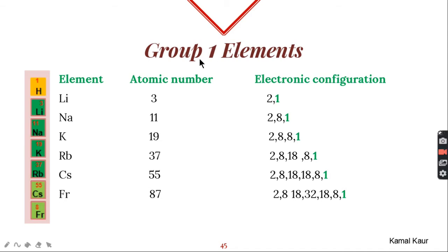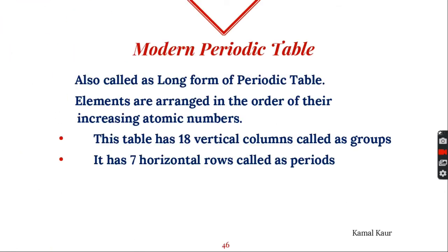For example, the elements of group 1 — lithium, sodium, potassium, rubidium — if we write their electronic configurations, we see that they have similar outer electronic configurations. All of them have the same number of valence electrons. This similarity in outer electronic configuration gives rise to similar properties of all elements present in one group.